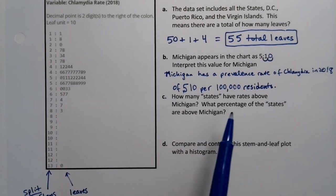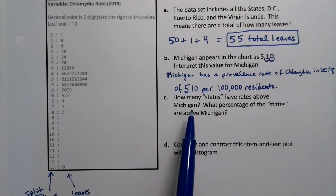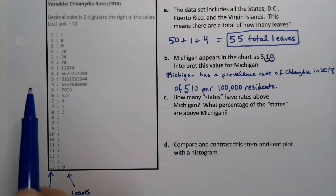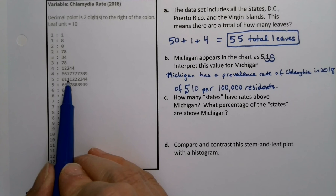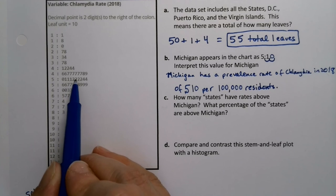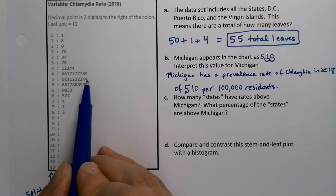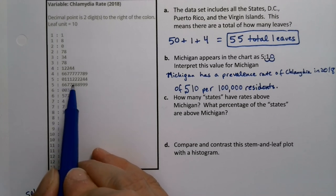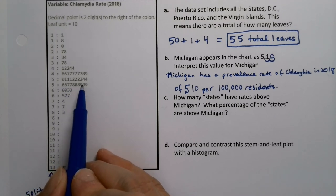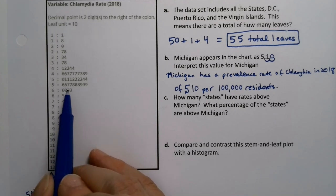Now how many states have rates above Michigan? Okay, speaking of counting. So we don't know which of these three ones Michigan is, so we'll just assume it's the highest one and we're going to count the states that are above it. So there's four twos, four, five, six, seven, eight, nine, 10, 11, 12, 13, 14, 15, 16, 17, 18, 19, 20 by the end of the sixth line.